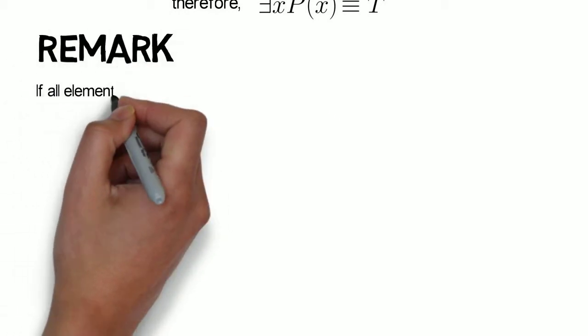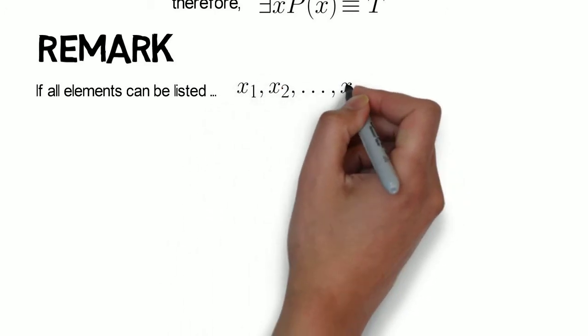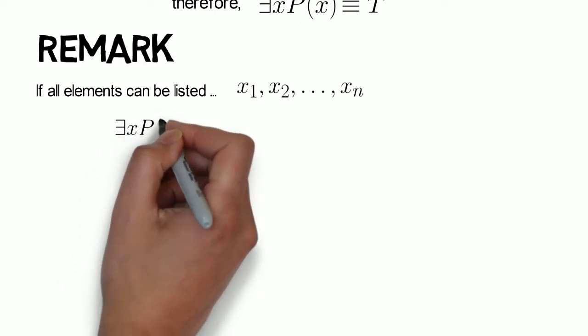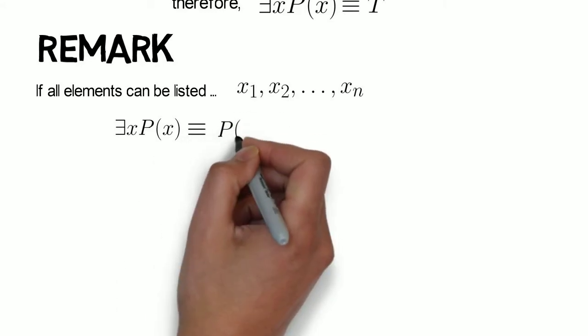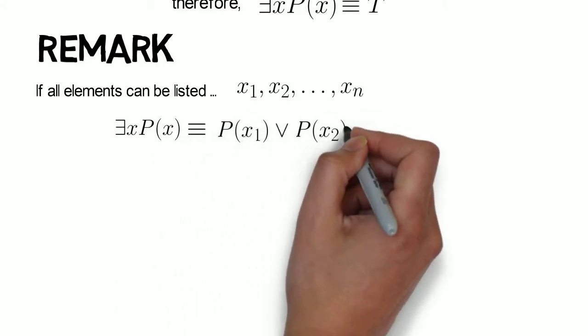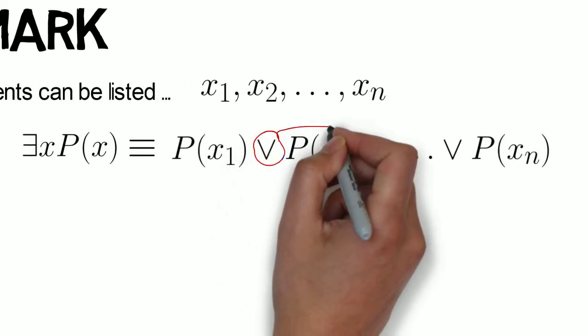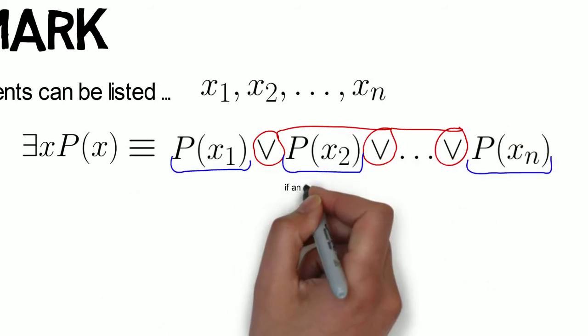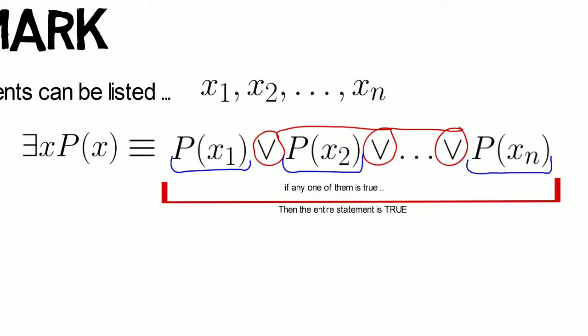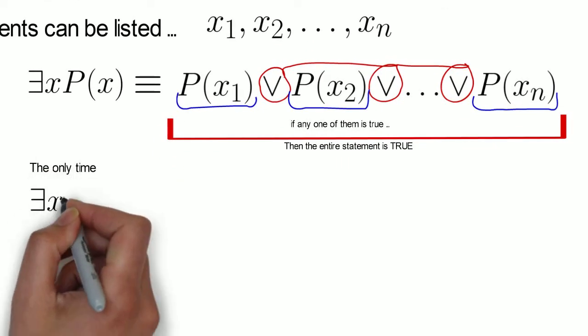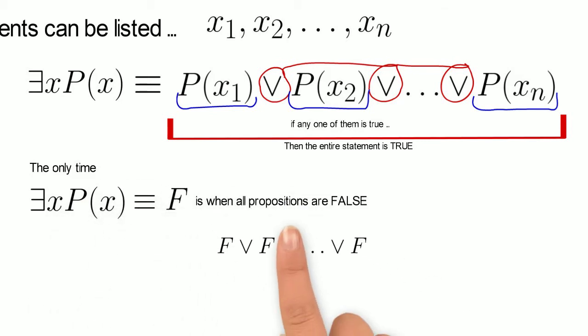If all elements in the domain can be listed, like x₁, x₂, all the way to xₙ, the existential quantification ∃x P(x) is the same as the disjunction P(x₁) ∨ P(x₂) ∨ ... ∨ P(xₙ). This compound logical statement is true if one or more of the propositions are true. The only time this compound logical statement is false is when all of the propositions are false.